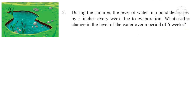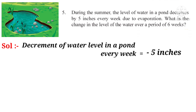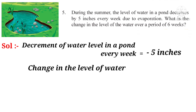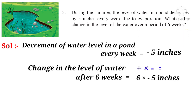Question 5: During the summer, the level of water in a pond decreases by 5 inches every week due to evaporation. What is the change in the level of water over 6 weeks? Solution: Decreases indicates negative, so decrement per week is minus 5 inches. Over 6 weeks means repeated addition or multiplication — 6 into minus 5 inches equals minus 30 inches. The water level decreases by 30 inches over 6 weeks.